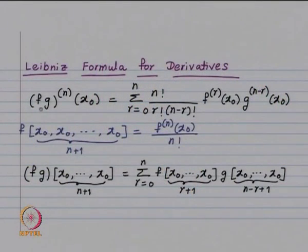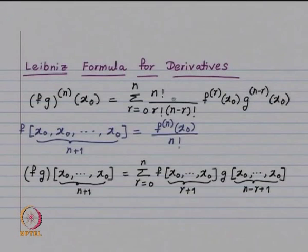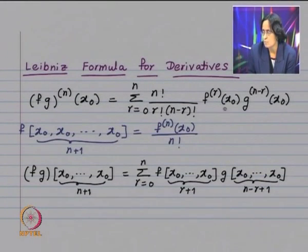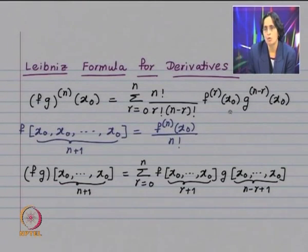The Leibniz formula for derivatives states: if you have two functions f and g which are n times differentiable, the n-th derivative of f·g at x₀ is given by summation r from 0 to n of n!/(r!(n-r)!) times the r-th derivative of f at x₀ and the (n−r)-th derivative of g at x₀. So the derivative of f·g is given in terms of the derivatives of f and g up to order n.